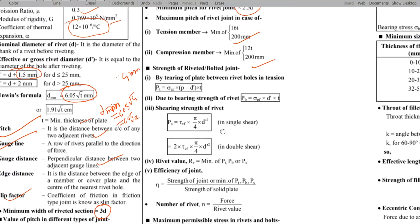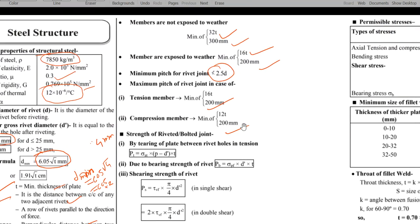Minimum pitch for rivet is not less than 2.5d. Maximum pitch of the rivet joint in case tension member is 16t or 200 mm. Compression is 12t or 200 mm. So the code provision questions will examine minimum pitch minimum edge distance. So suppose compression member, suppose t is given as 10 mm, so minimum of 12 into t, t is basically 10 mm, so minimum is 120 mm, so 120 or 200, the minimum is 120, so maximum pitch of the rivet joint is 120 mm for that case.